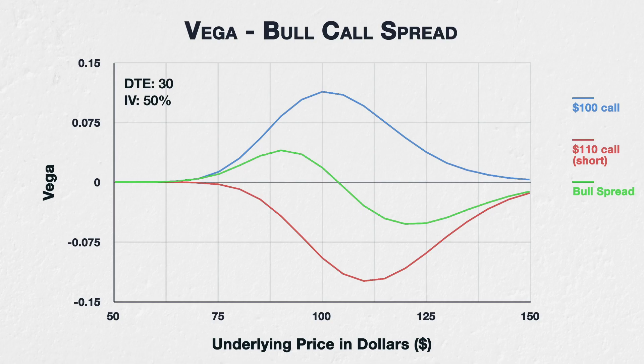Whether the vega is positive or negative for the spread depends on where the underlying price is in relation to the strike prices. Starting on the far left, with the underlying price down at $50–$65, both options are so far out of the money that they both have hardly any sensitivity to changes in implied volatility. Vega is therefore very small for both individual options, and also the spread as a whole.